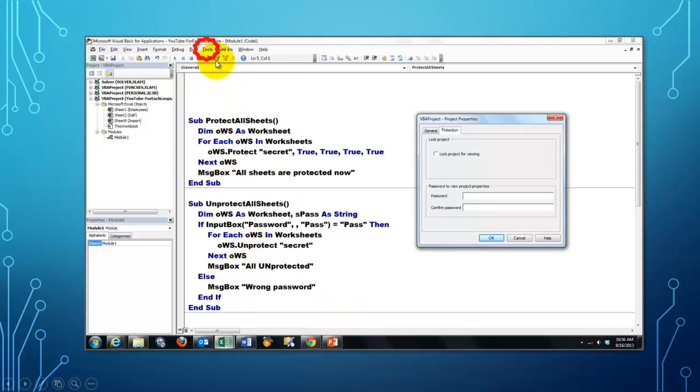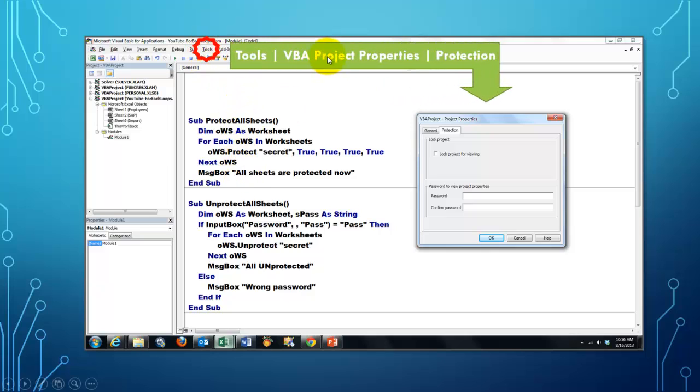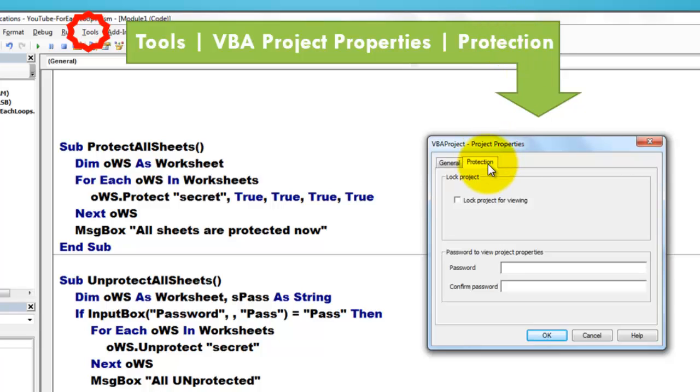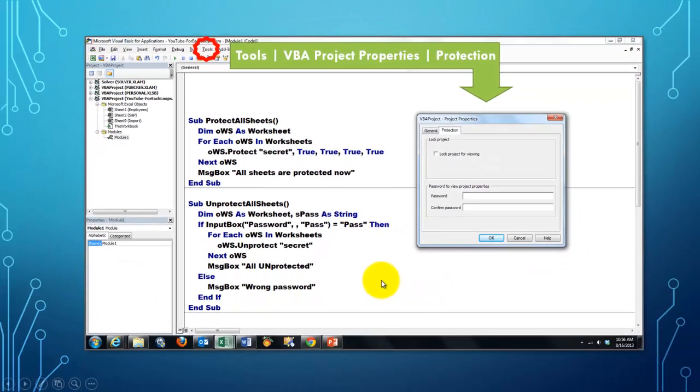You go to VBA again, Alt F11 and under Tools, VBA Project Properties, go to the Protection tab, lock the project for viewing, and type your new password there. So if the user wants to know what is the password that the maker of this VBA code used, then you can lock that. Whenever they try to open VBA, it will say, do you know the password? If they don't, they will not be able to see this.